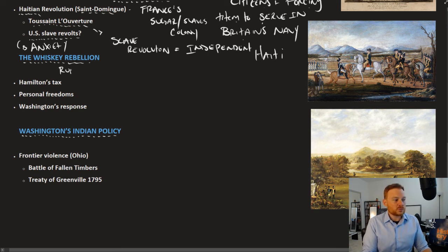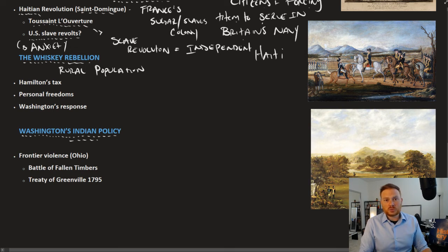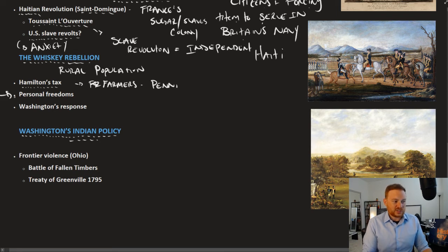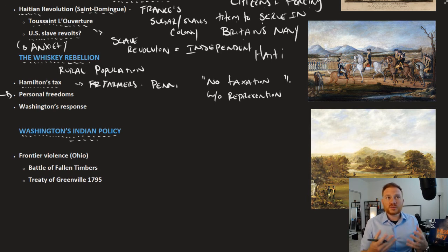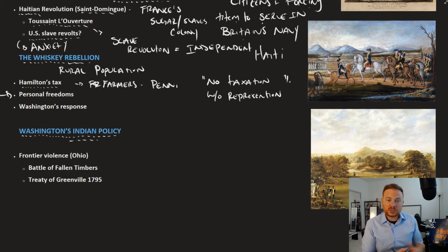The Whiskey Rebellion was a domestic issue involving the rural population. It was inspired by Hamilton's tax. Mostly farmers in Pennsylvania protested the tax based on their personal freedoms, using the same slogan from the American Revolution: no taxation without representation. This time, however, it was not the British government taxing them but the United States government. Many endorsed the Democratic-Republican principle of lower taxes and more personal freedoms. In fact, many farmers not only refused to pay the tax but also tarred, feathered, and assaulted tax collectors.